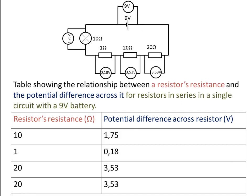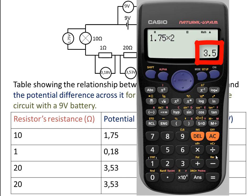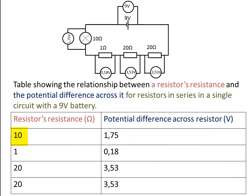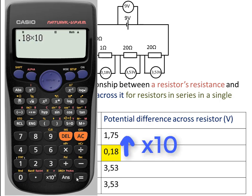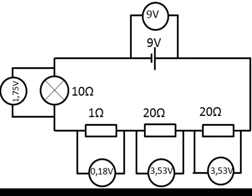Let's look at our data with a calculator. Remember there are rounding off issues. If you write 1.75 multiplied by 2, you get 3.5 — so 1.75 is half of 3.5, just as 10 ohms is half of 20 ohms. Then comparing 10 ohms and 1 ohm: 10 ohms is 10 times more than 1 ohm. If you take 0.18 and multiply by 10, you get 1.8. If you round 1.75, you get 1.8. The real voltmeter reading should be 0.175; multiplied by 10, that gives 1.75. So within rounding error, the voltage across the 10 ohm resistor is 10 times more than across the 1 ohm resistor.